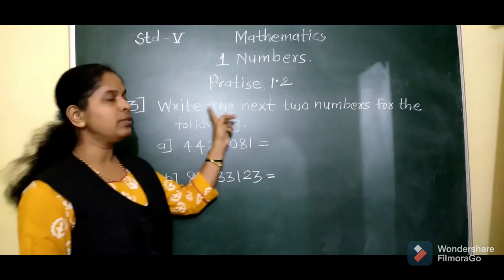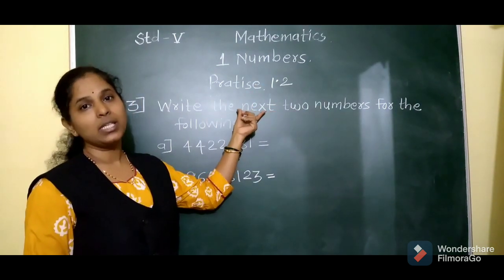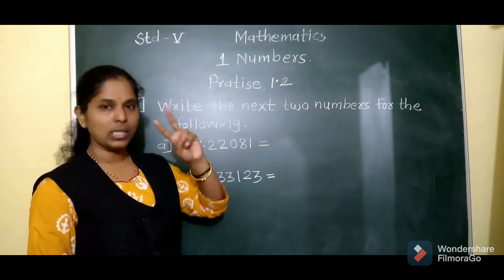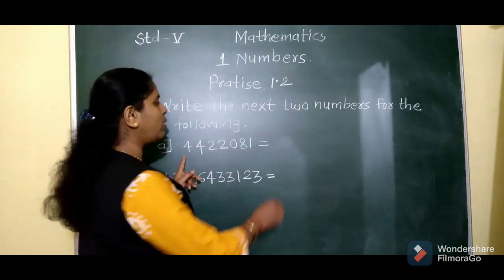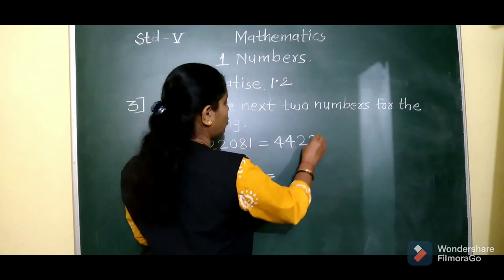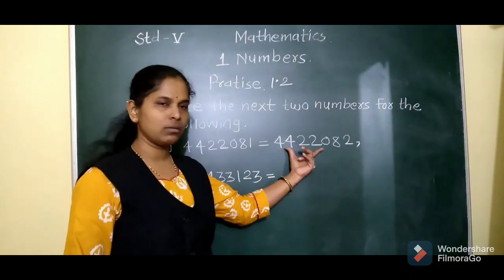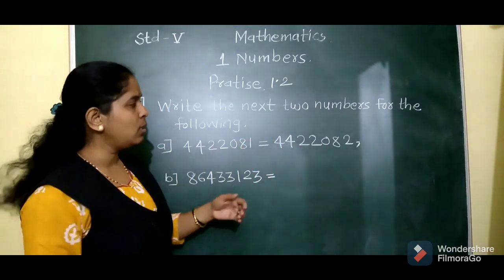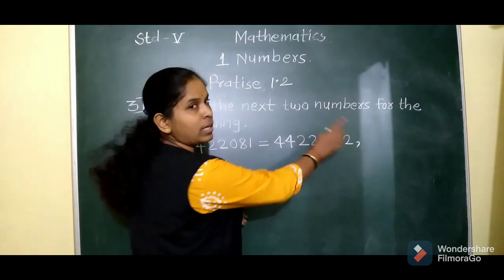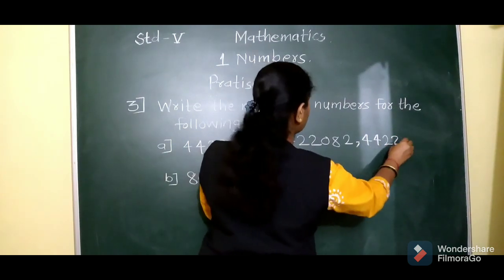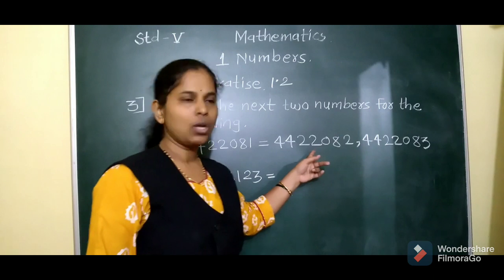Question number 3: write the next 2 numbers for the following. Next 2 numbers means we have to write 2 successors. The given number is 4422081. Add 1 at the 1's place: 1 plus 1 is 2, so the first successor is 4422082. Then add 1 again: 2 plus 1 is 3, so the second successor is 4422083. These are the next 2 numbers of the given number.